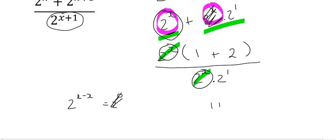At the top then, we're going to be left with 1 plus 2, and at the bottom, we're going to be left with 2. And so 1 plus 2 is 3, and at the bottom, we're left with 2.